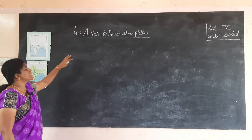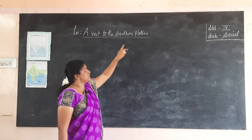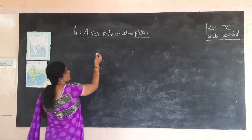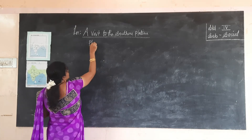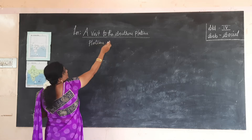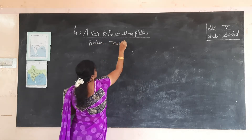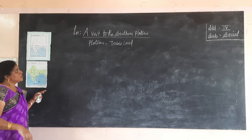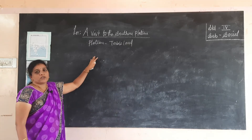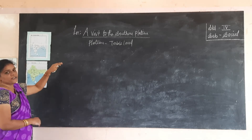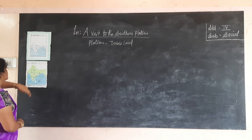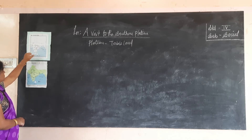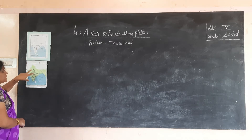Good morning students. Today we are going to see the new lesson: a visit to the southern plateau. So what do you mean by plateau? A plateau is known as a tableland — it is flat land. Through this lesson we are going to see the southern part of the country. In the map you can see the southern states and this is a river map.